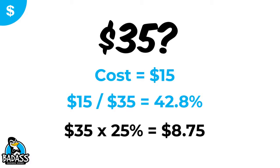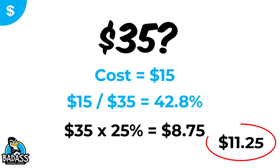If we take 25% of $35, we're setting aside $8.75 for expenses — much less than the $11.25 we set aside at $45. The question becomes: will $8.75 be enough? Honestly, you won't know until the end of the month. That $2.50 swing could come back and bite you. Time will tell.